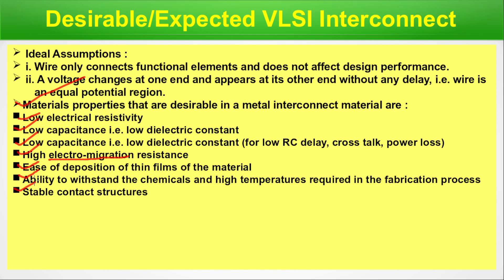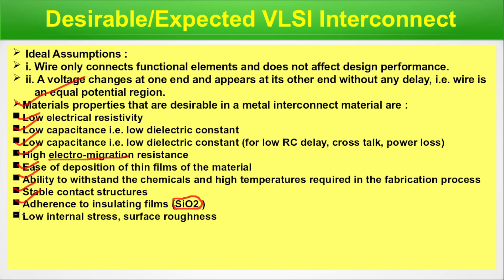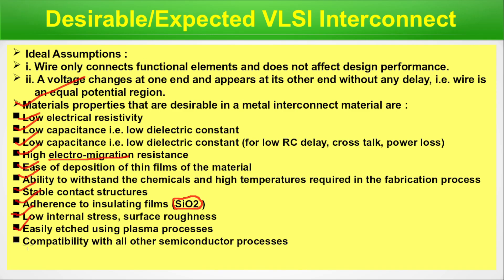If a chemical reaction starts, most of the time the resulting material will not be the intended metal — it will be some other material. Adherence to insulating films — silicon dioxide is the most common insulator, and the adhesion should be good. Low internal stress and surface roughness. Easily etched using plasma processes. Compatibility with all other semiconductor processes. And finally, low cost.